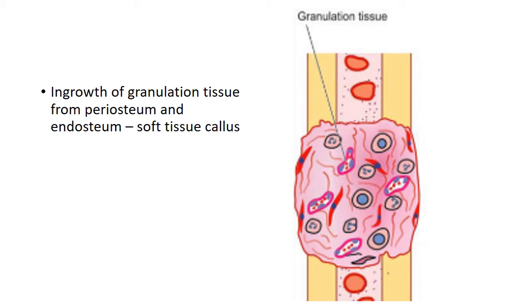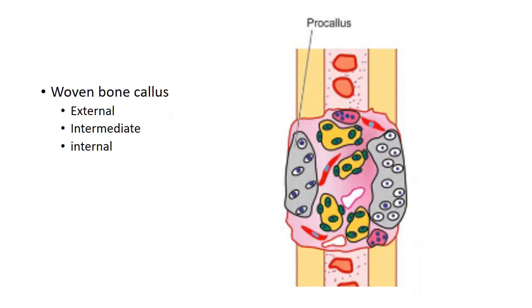Next, in-growth of granulation tissue occurs from both the periosteum and endosteum, and this gives rise to the formation of a soft tissue callus. This callus joins both fractured ends, but there is not much strength.